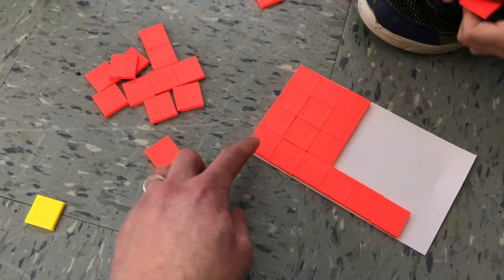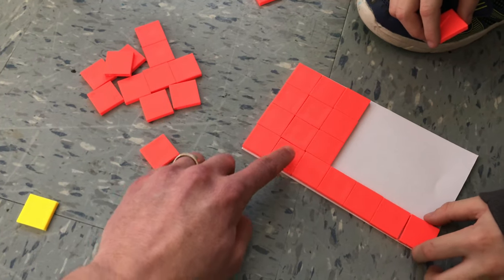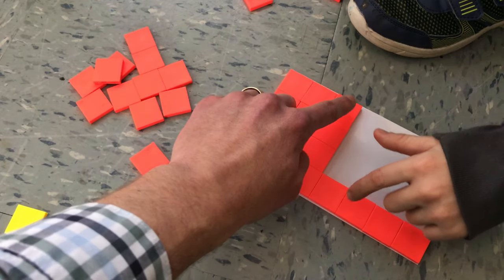Oh okay, let's double check. So how many rows do we have? One row, two rows, three rows.